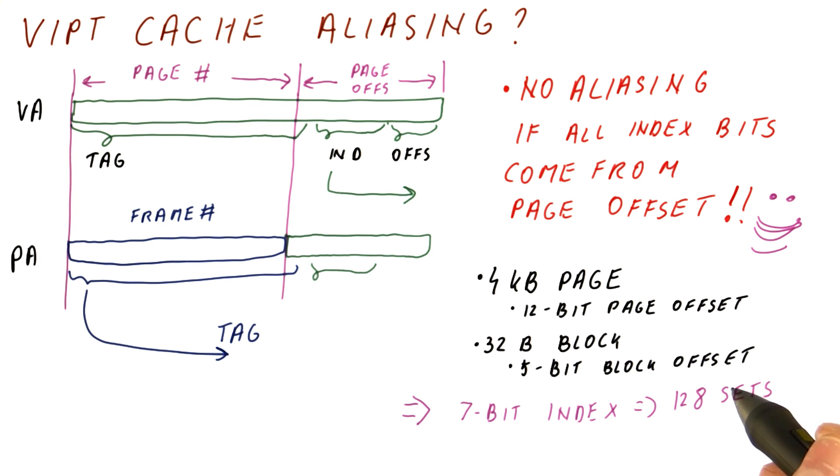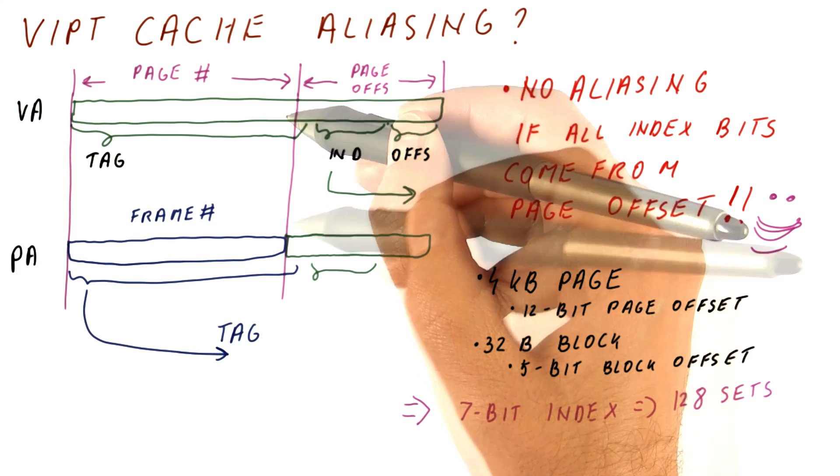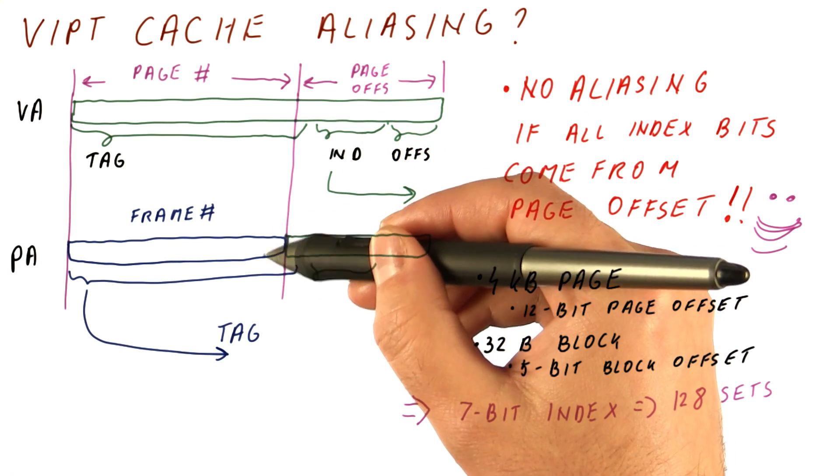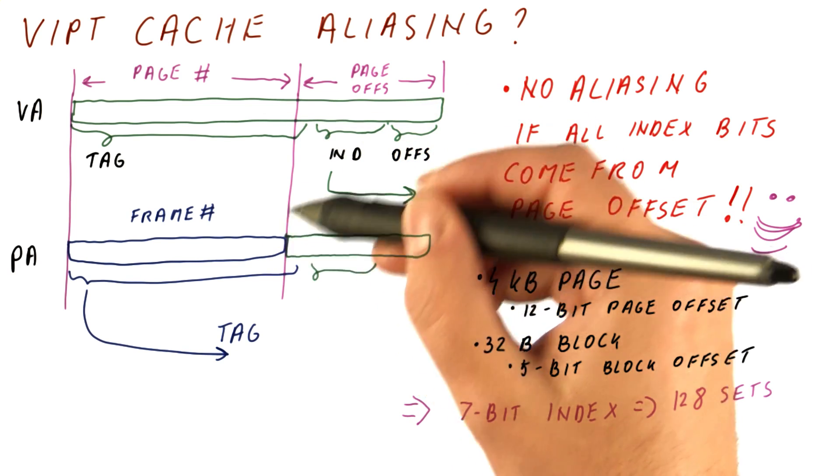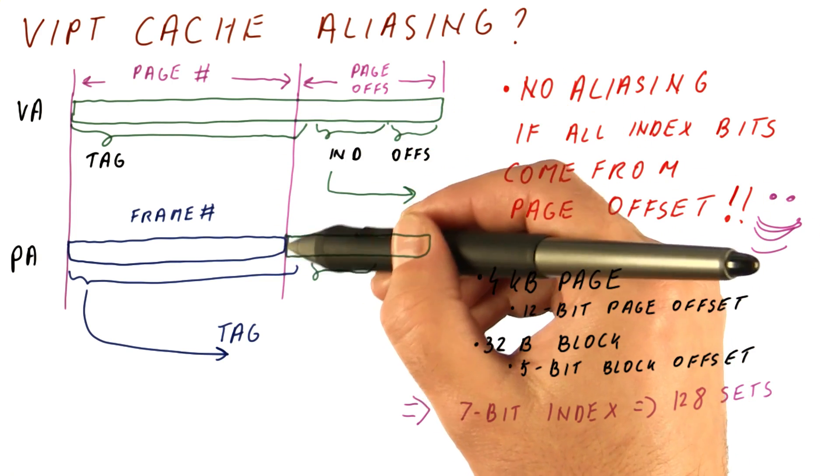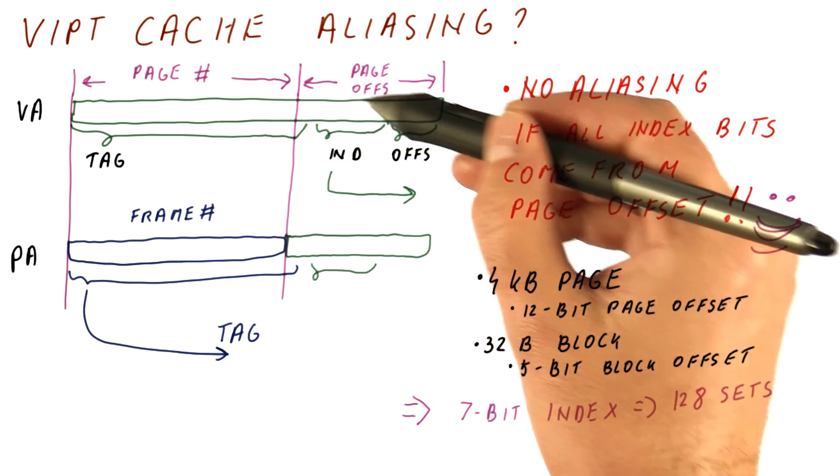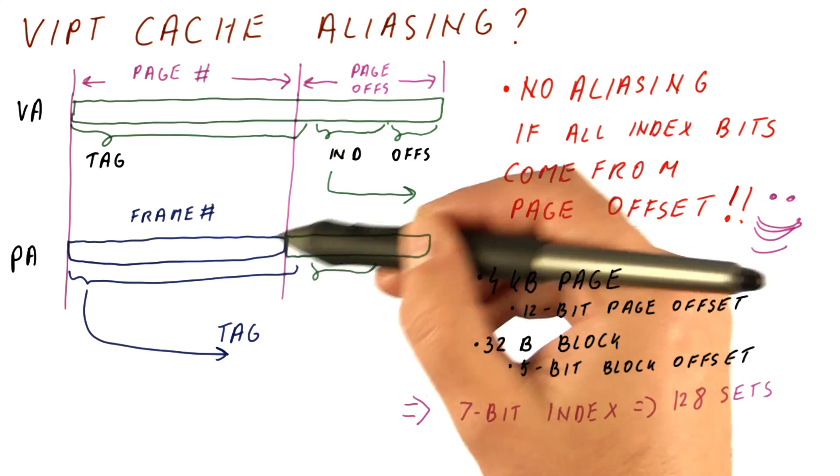If we have more sets than this, then some of the index bits here come from the page number, and that changes when we have the frame number. So it can easily be that the different these bits here end up mapping to the same frame number, which we don't want, because that means that multiple sets in the cache could have the same actual data, which is bad because we cannot find it then.